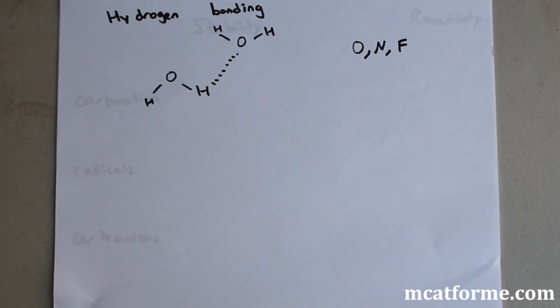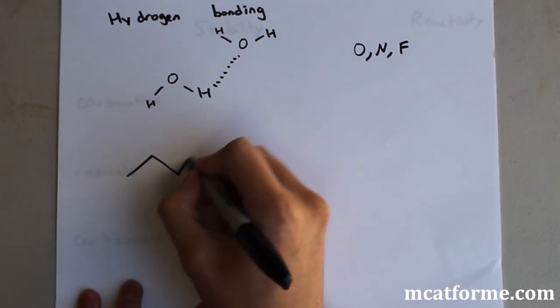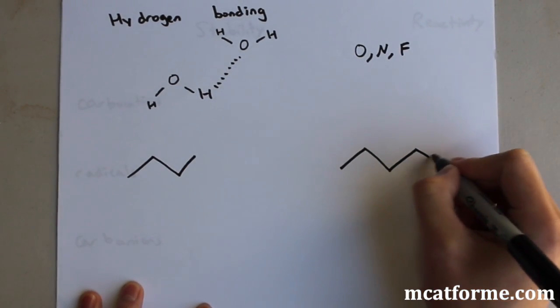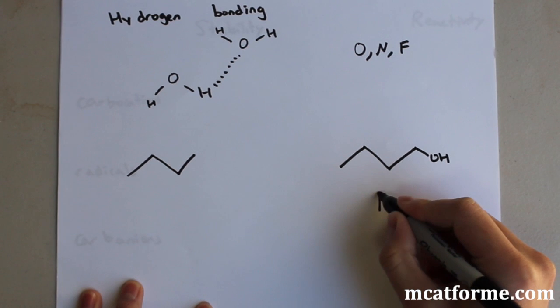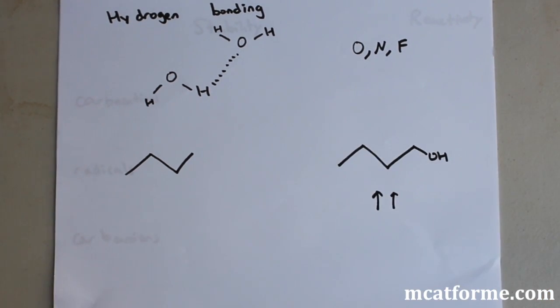Increase in hydrogen bonding will increase boiling point. This one would have an increase in melting point and also an increase in boiling point. Hydrogen bonding will increase melting point and increase boiling point.